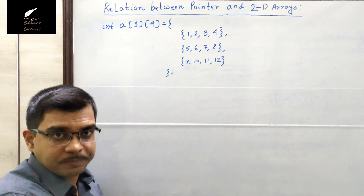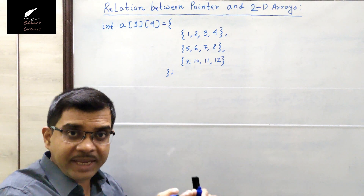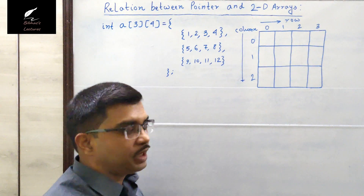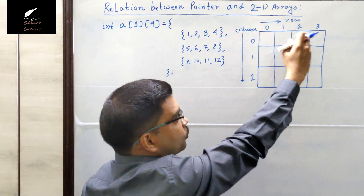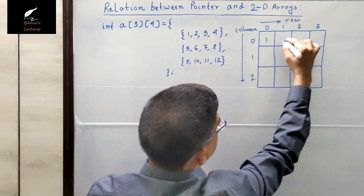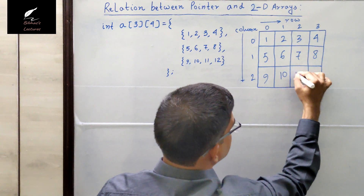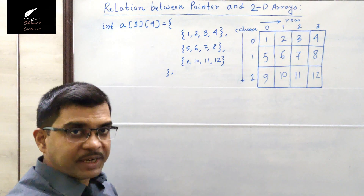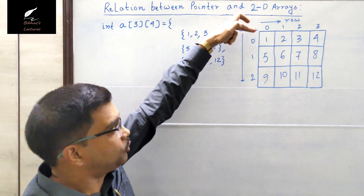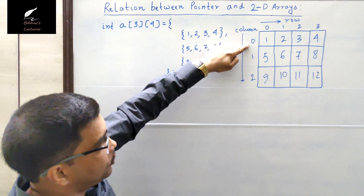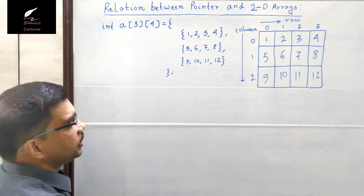Each 1D array contains 4 integer values — 4×3 = 12 elements. A 2D array can also be termed as a matrix. Representing this as a matrix of size 3×4: 3 rows and 4 columns, with elements 1, 2, 3, 4, 5, 6, 7, 8, 9, 10, 11, and 12. The row index and column index both start from 0.